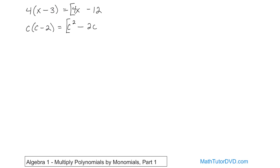The next one looks more like a typical algebra problem. On the outside, 3y; on the inside, y plus 5. We have a binomial times a monomial, so 3y gets distributed in. 3y times y: you add the exponents to get y squared, and 3 times 1 gives you 3, so 3y squared. Then 3y times 5: multiply the numbers to get 15, and y comes along for the ride. So the answer is 3y squared plus 15y.